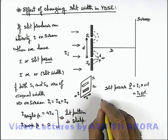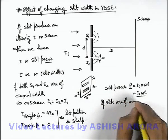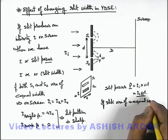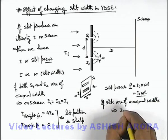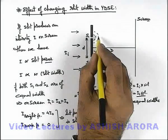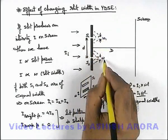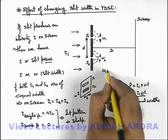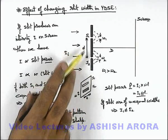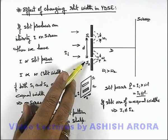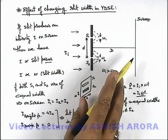But if slits are of unequal widths, this implies in this situation I₁ will not be equal to I₂. If this slit is having a width w₁ and this having a width w₂ such that w₁ is greater than w₂, then we can directly write the power of slit 1 will be more than power of slit 2. So intensity due to slit 1 on screen will be more than the intensity due to slit 2.